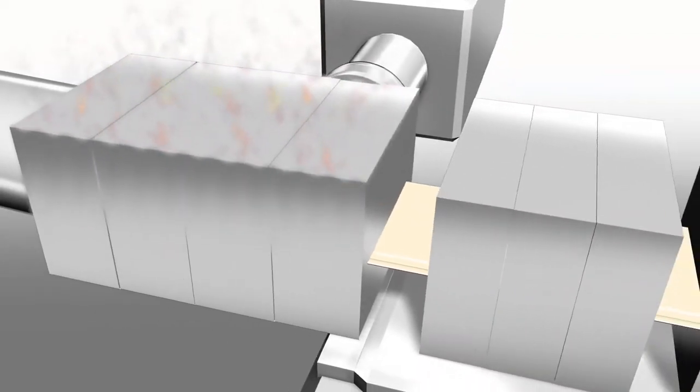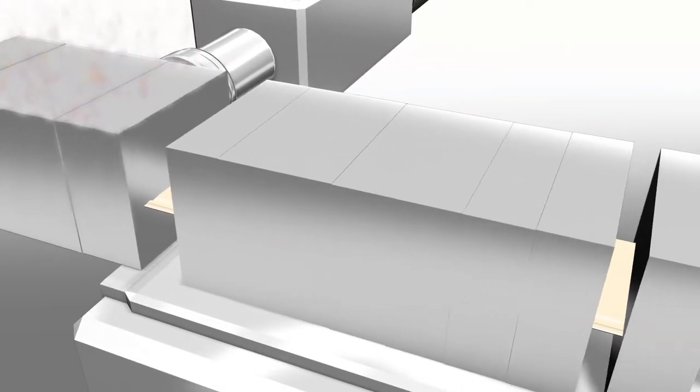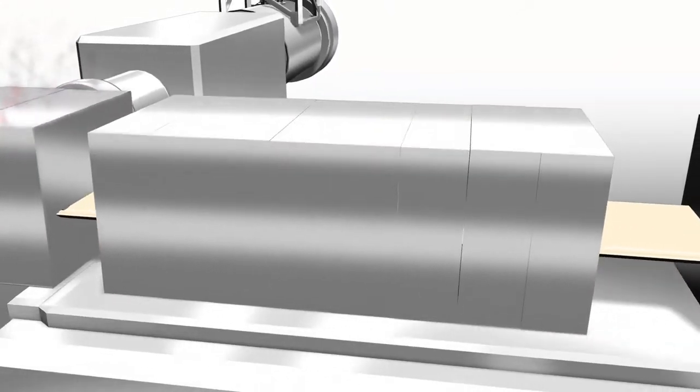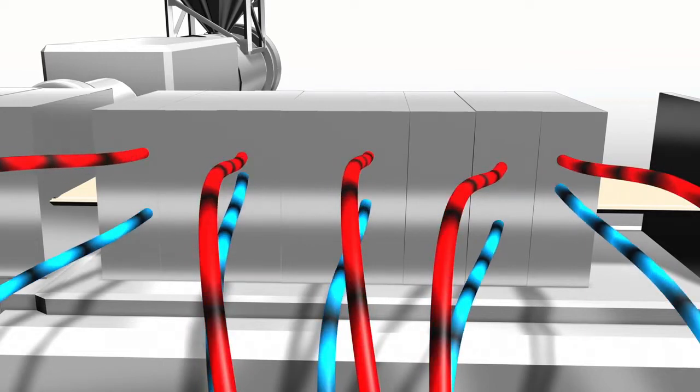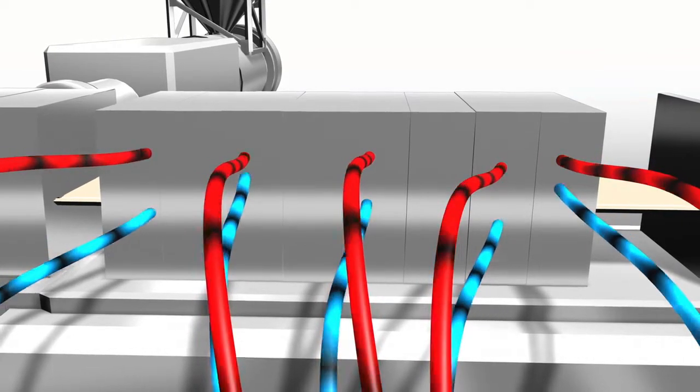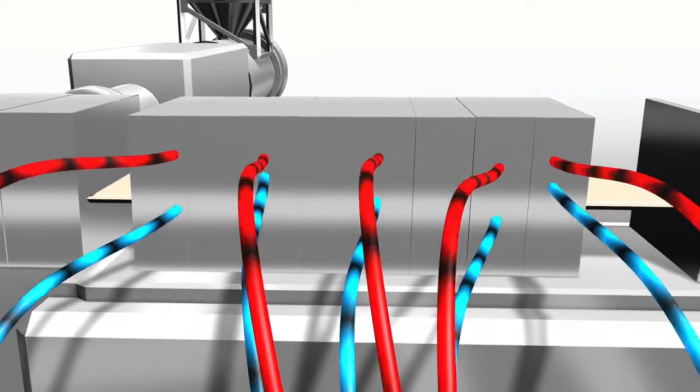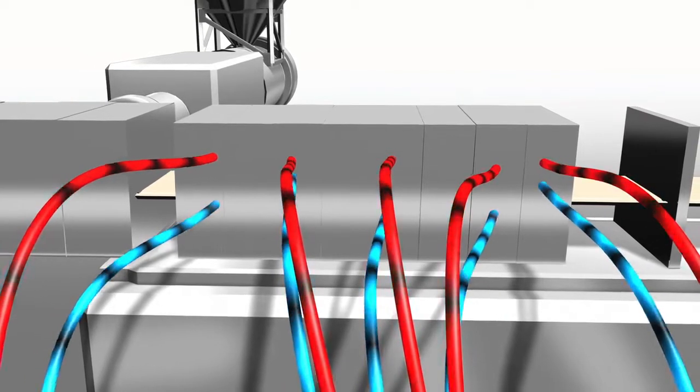From the die, the material then moves into the calibration system. Traveling through the multiple plates within the calibrator block is the final step in defining the geometry and critical characteristics of the profile. These calibrator blocks have water that is chilled to 55 to 60 degrees Fahrenheit to cool the profile, while a vacuum holds the material to the sides of the calibrator to maintain the profile's geometry.